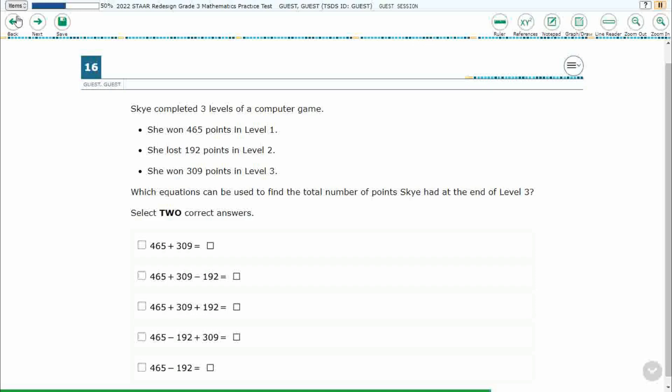So Sky completed three levels of a computer game, winning, losing, winning. We need to find some equations that can be used to find the total number of points Sky had, but we need to select two correct answers, so there's two ways to find this problem. Now, this is a two-point problem. So you can only select two.